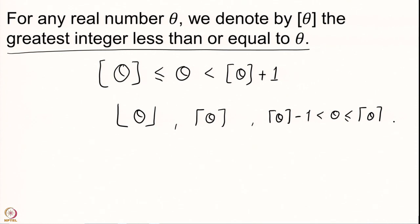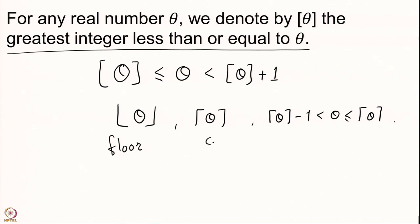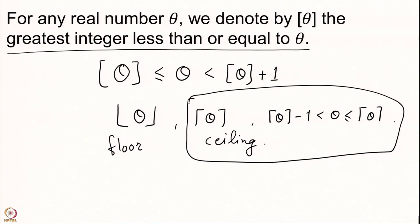Whenever we have marks obtained by students involving fractions, we convert every fraction to a whole number — we call it rounding up. When you buy vegetables and the bill comes to 503, you simply say 500 — that is the floor function. When we round up marks obtained by students, we take the ceiling function. We are not going to discuss the ceiling function in this course; the only function we use is the floor function, denoted [θ]. Remember, it is the greatest integer less than or equal to theta.